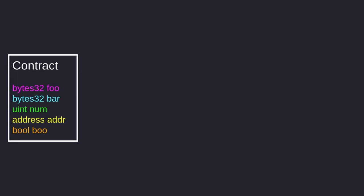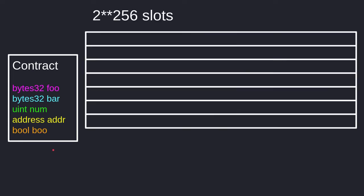Let's see how the Ethereum virtual machine stores state variables. Say we have a contract with some state variables: a bytes32 called foo, a bytes32 called bar, a uint called num, an address type, and lastly a boolean. The EVM stores these state variables in a huge array with a length of 2 to the 256. You can imagine the storage of a contract as an array with 2^256 slots, where each slot can store up to 32 bytes. These state variables will be stored in the order that they are declared.